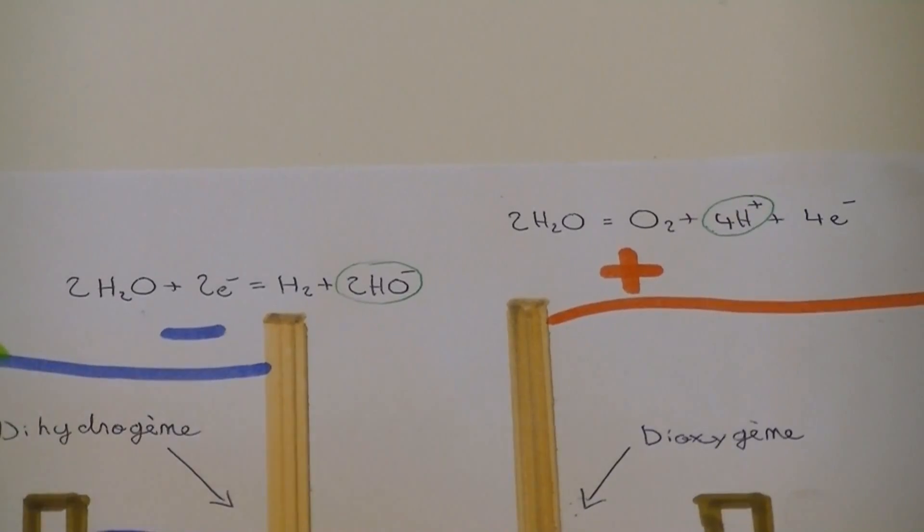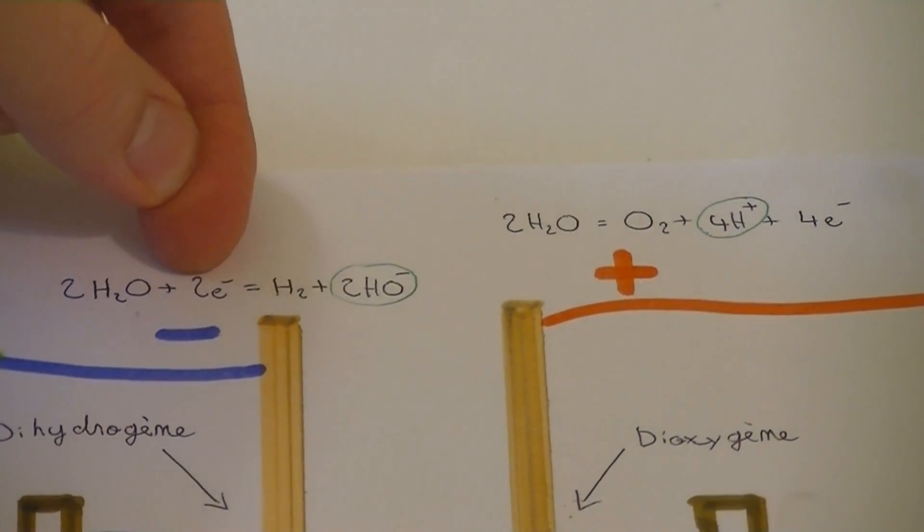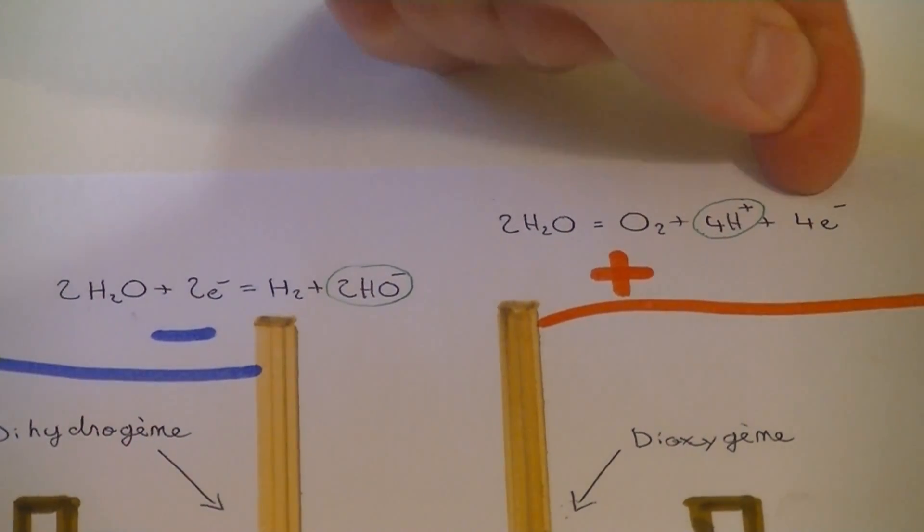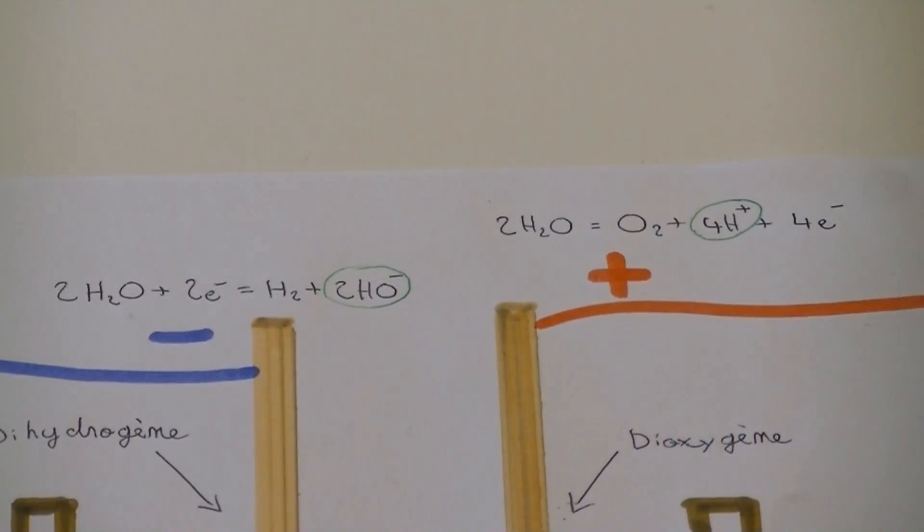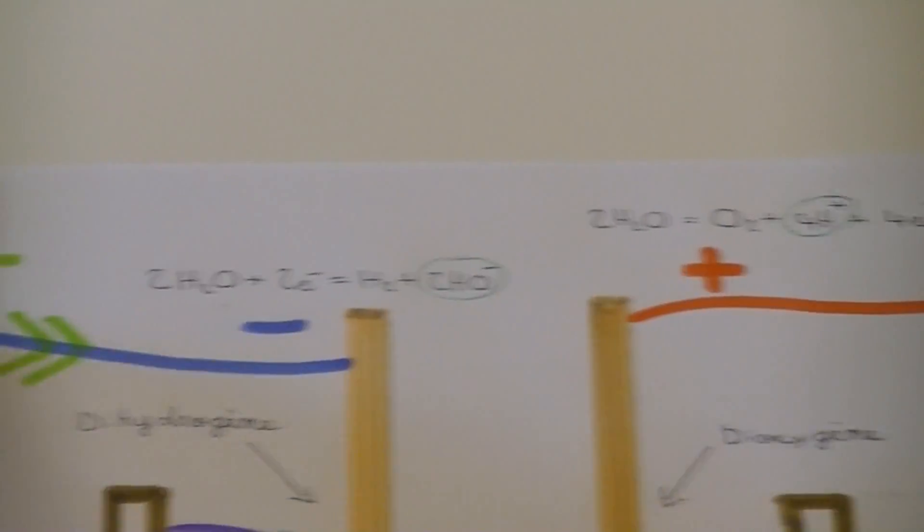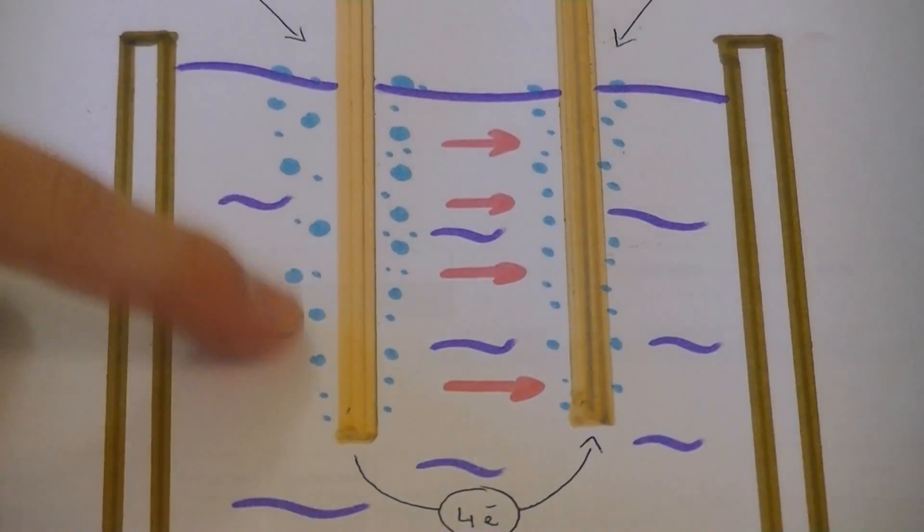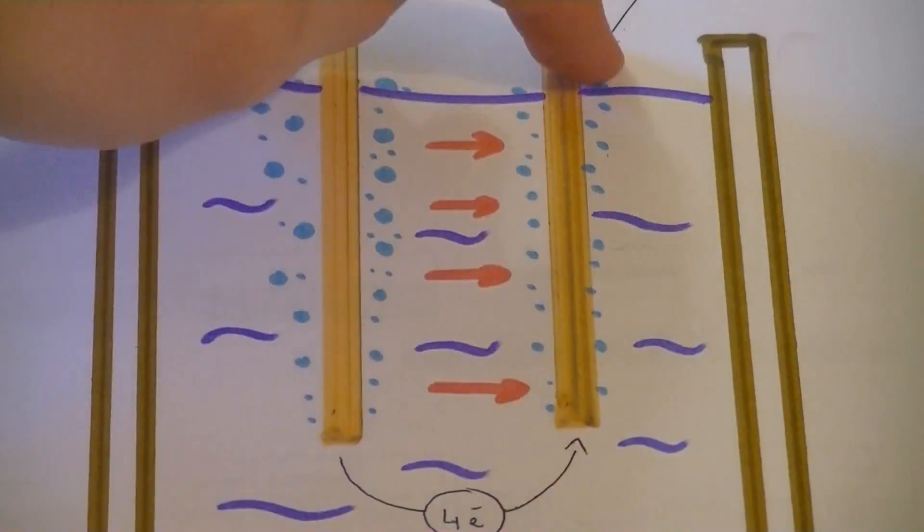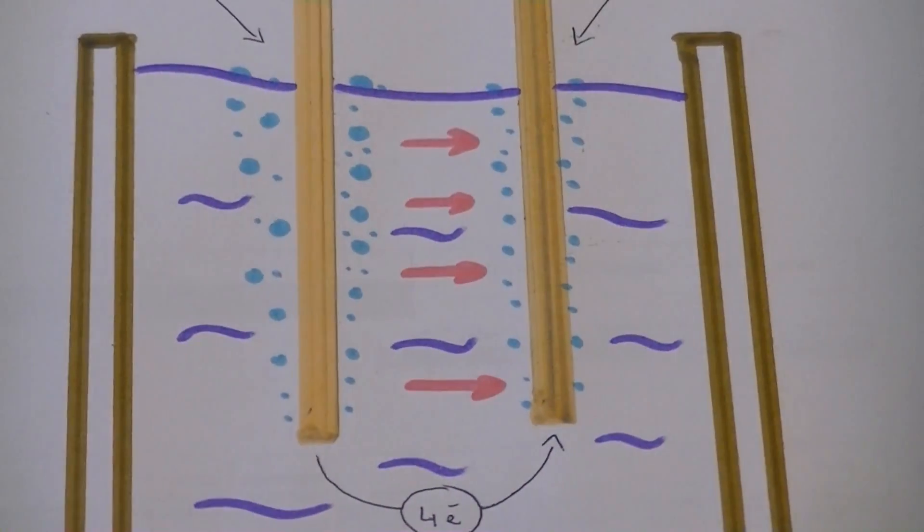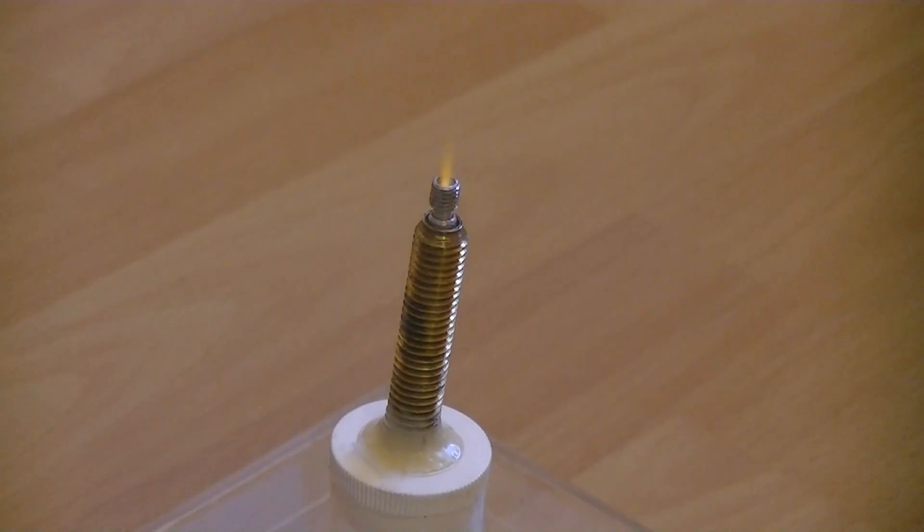The first reaction uses up 2 electrons while the second one releases 4. For the sake of coherence, the first reaction needs to take place 2 times faster than the second one. That's why we produce 2 times more dihydrogen than dioxygen. This is the exact preparation needed for both to burn simultaneously.